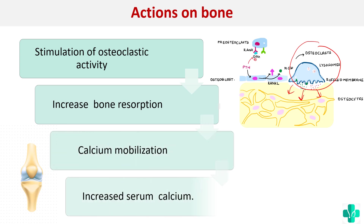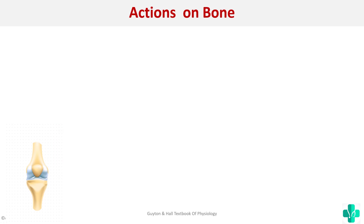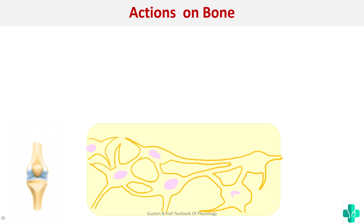And thereby it increases the serum calcium levels. Moving to an advanced level, as seen in many MBBS textbooks, we will understand how parathormone acts on the bone. The bone has many osteocytes present, and on its surface we have osteoblasts.